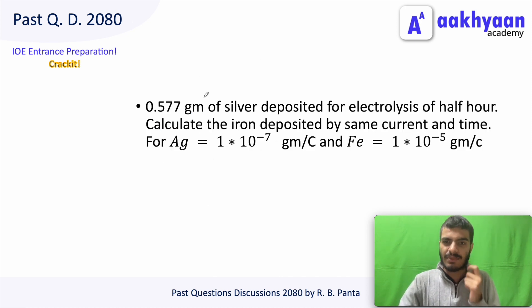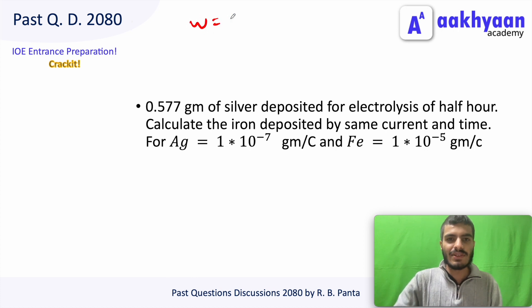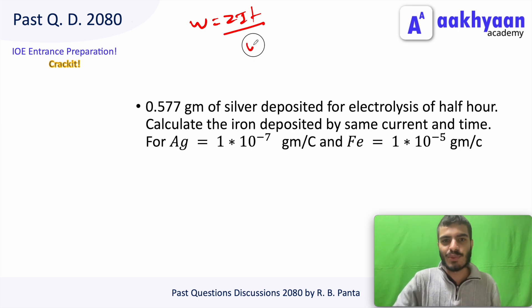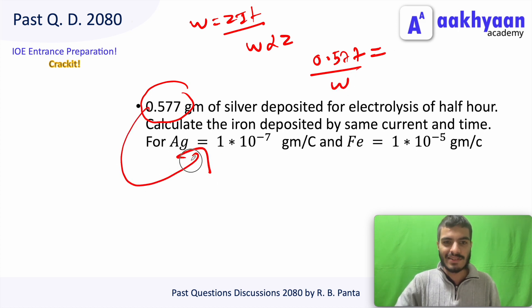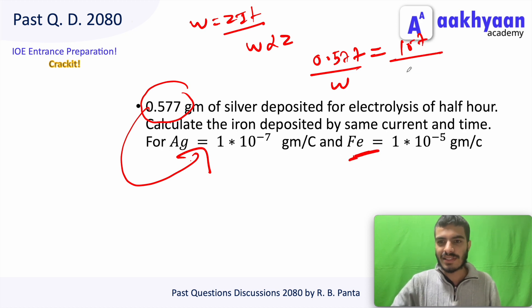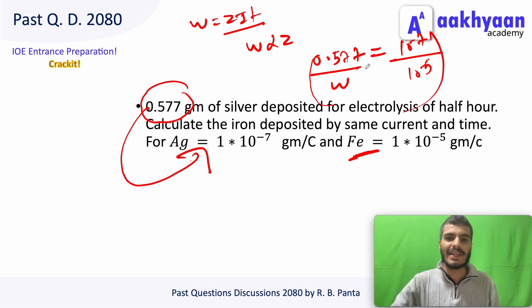0.577 grams of silver is deposited by electrolysis in half an hour. We need to find the iron deposited by the same charge and time. Using Faraday's law: W = ZIt, weight is proportional to electrochemical equivalent Z. For silver, W = 0.577 g; we find the ratio of Z values. The electrochemical equivalent is related to 10^(-7) and the calculation uses W = ZIt.